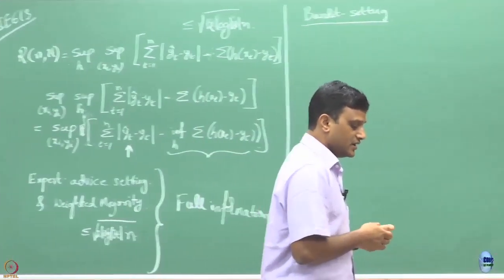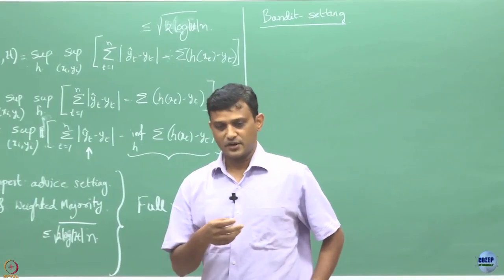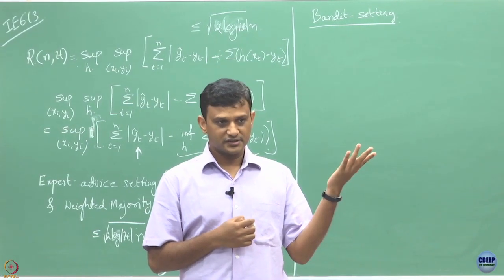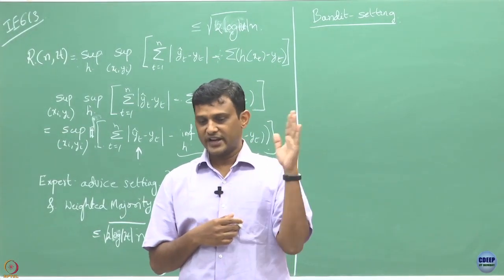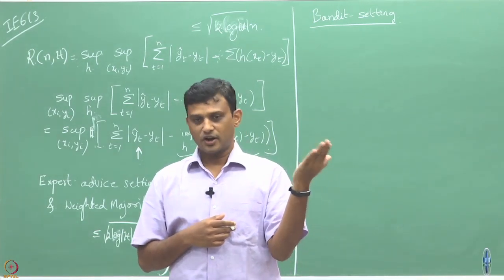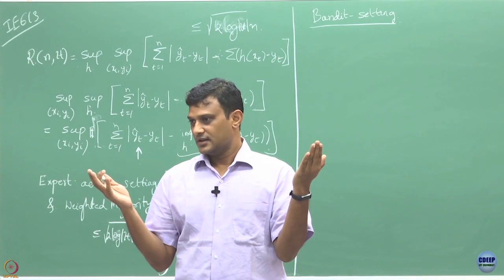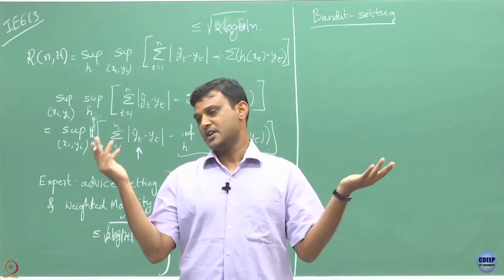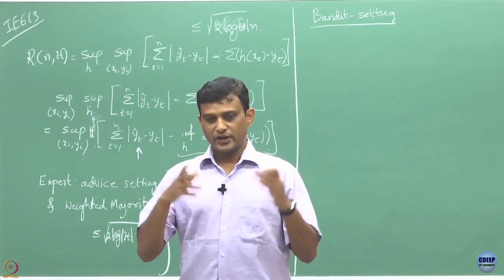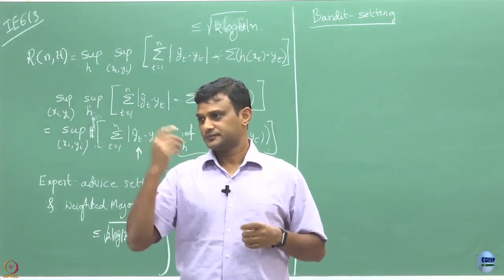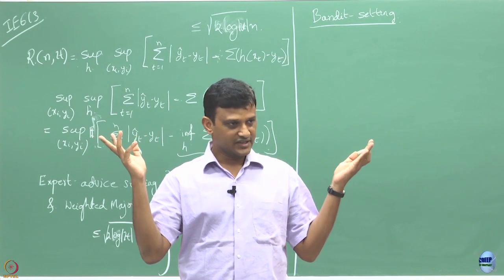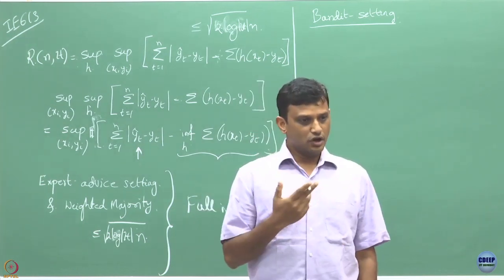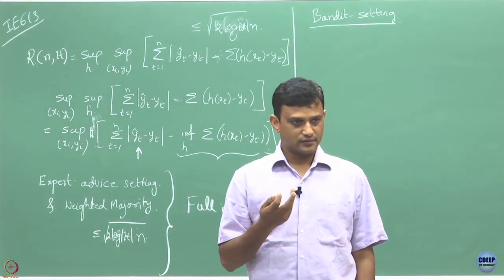Another example is the share market. On a particular day, you have the option to buy 10 stocks or shares; you buy one share and get to see whether you made money or not. You may not get to see the values of the other stocks. But maybe if you go to the newspaper, they might have announced the loss incurred by the other shares or stocks.